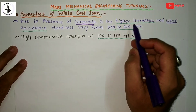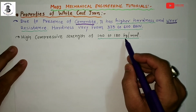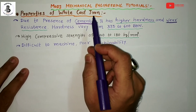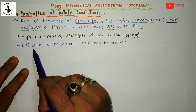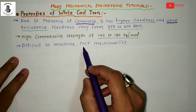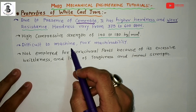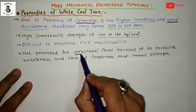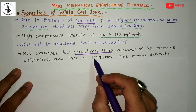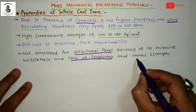This material also has high compressive strength of around 140 to 180 kg per mm². Due to the higher amount of hardness found in white cast irons, such materials are difficult to cut — difficult to machine into a desired shape and size — so it has poor machinability. With higher hardness and high compressive strength, white cast irons are not employed for structural parts because they have more brittleness, lack of toughness, and low impact strength.